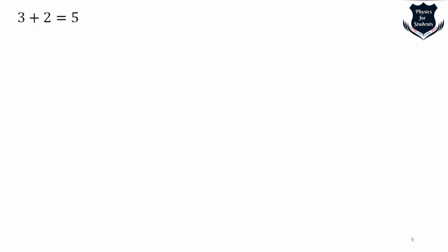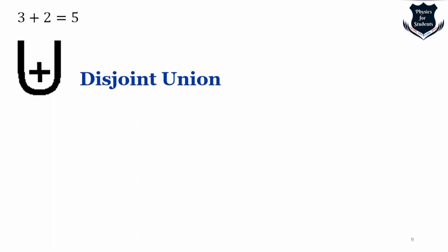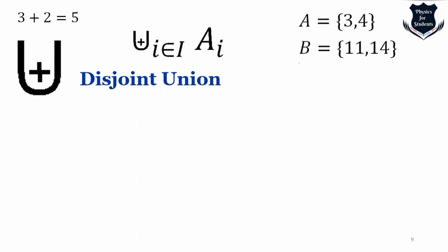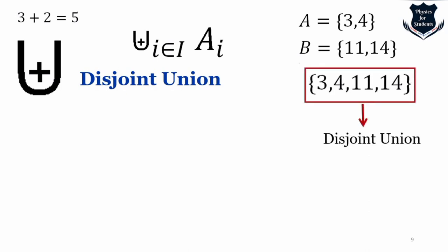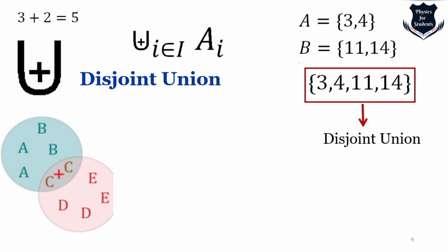Beyond the simple three plus two equals five, the plus sign is also used for disjoint union — represented by a U sign with a plus in the middle. For example, set A equals {3, 4} and set B equals {11, 14}: when we join all elements of both sets as a disjoint, this is called the disjoint union.